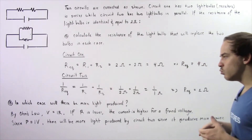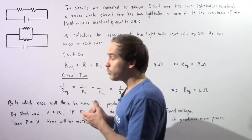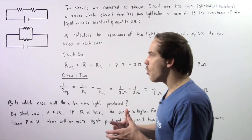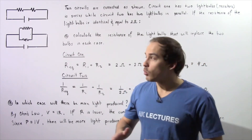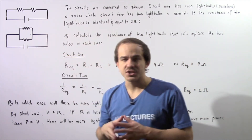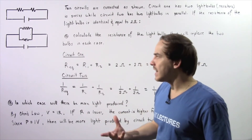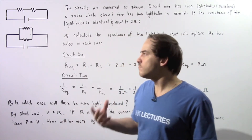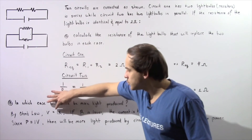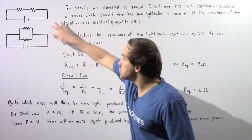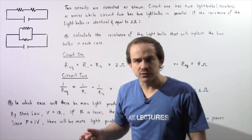Now let's move on to part B — in which case will there be more light produced? To determine this, we calculate in which case we have more electric power. Electric power equals the product of voltage and current, and voltage is constant for both cases. So to find which circuit produces more power, we need to find which has more electric current. By Ohm's law, voltage equals I multiplied by R, so a smaller equivalent resistance results in a greater current.